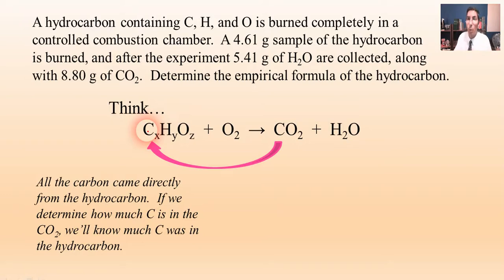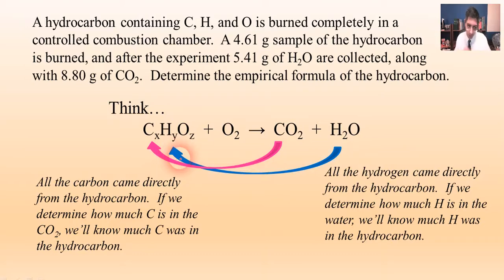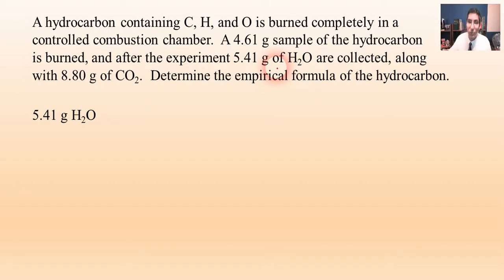We can do the same thing for water. We know that precisely 5.41 grams of water are collected, and all the hydrogen in that water came from the hydrocarbon. So if we figure out how many grams of hydrogen are in the water, we'll know how many grams of hydrogen were in the hydrocarbon. Let's do both of those — starting with the water to find out how many grams of hydrogen are in it.